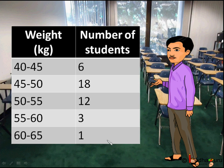Heaviest student is actually 64 kg, since 60 to 65 kg range. Say we need to find the average weight of the class, that is mean weight of the class. Now this is grouped data.